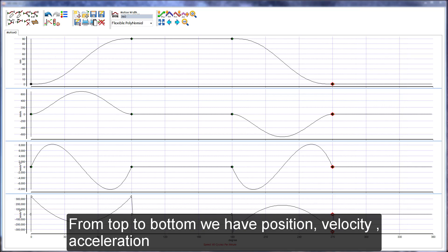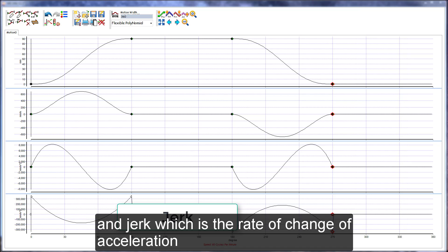From top to bottom we have position, velocity, acceleration, and jerk, which is the rate of change of acceleration.